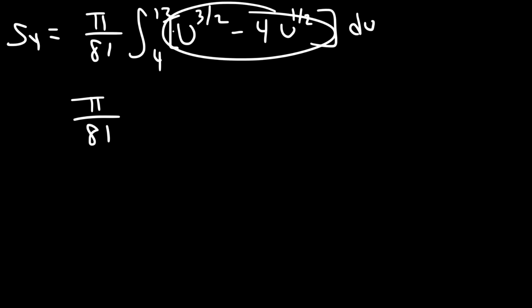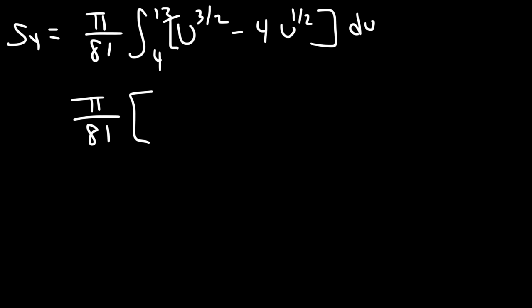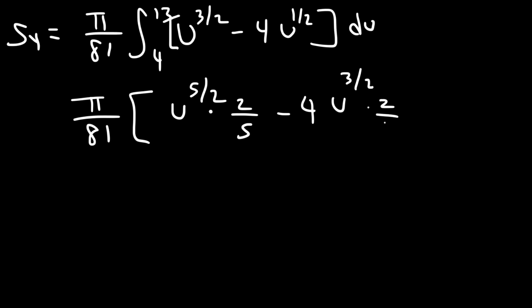Now we can integrate this expression. The antiderivative of u to the 3/2 using the power rule: adding 1 to 3/2 gives 5/2, and instead of dividing by 5/2 we multiply by 2/5. For the negative 4u to the 1/2 term: 1/2 plus 1 is 3/2, and we multiply by 2/3. Let's evaluate this from 4 to 13.